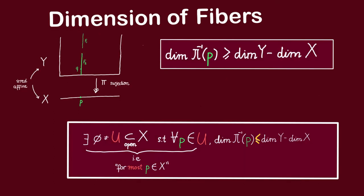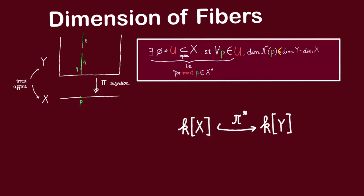Equipped with that, let us try to construct a set of points P such that the dimension of fibers over P is less than or equal to dimension of Y minus dimension of X. Observe that since pi is surjective, the induced map on coordinate rings must be injective. This is because any regular function f on X that pulls back to 0 must vanish on the image of pi, which is the whole of X, so f itself must be 0. Thus pi-star is injective, and we can think of the coordinate ring of X as a subring of the coordinate ring of Y.